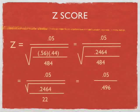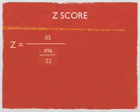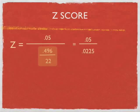Again, if we divide 0.496 divided by 22, we should get 0.05 divided by 0.0225. That equals to 2.217.